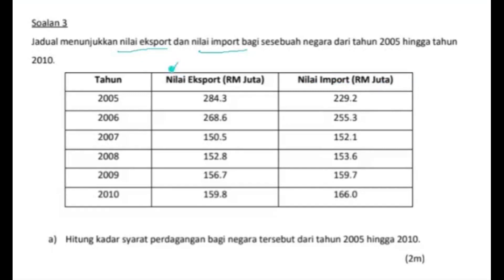Miss nak tekankan sikit. Kalau anda nampak berkaitan dengan nilai, nilai dekat sini sebenarnya merujuk kepada harga darab dengan kuantiti. Harga darab dengan kuantiti, dan harga dekat sini adalah price, iaitu harga ekspor. Kuantiti pula merujuk kuantiti ekspor. Kalau katakan nilai import juga sama, harga darab dengan kuantiti, cuma harga itu kita rujuk kepada harga import dan kuantiti kepada kuantiti import.